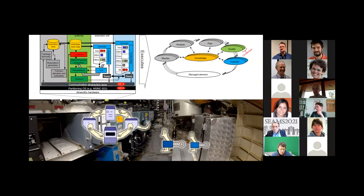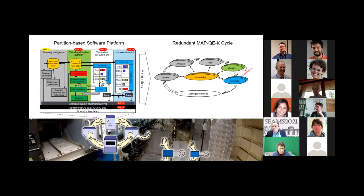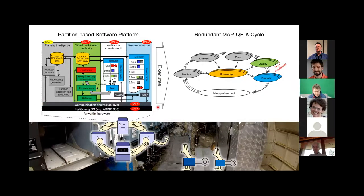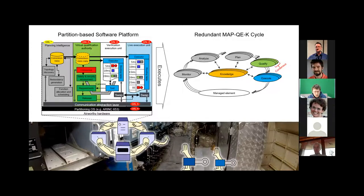We think there's a way to realize that. We created a concept based on something established in aerospace: a strictly time and memory partitioning operating system. We think we can map the MAPK loop onto four different partitions. The most interesting point is that the most complex algorithms are in the first part, which doesn't need the highest design assurance level. We add a qualification part, making it a MAPK-Q cycle, where the system mimics the manual activities of a qualification authority.